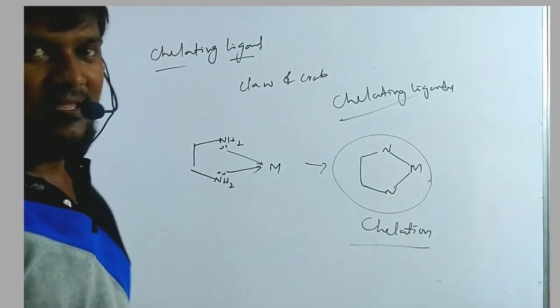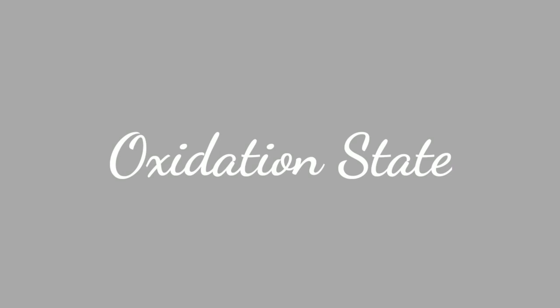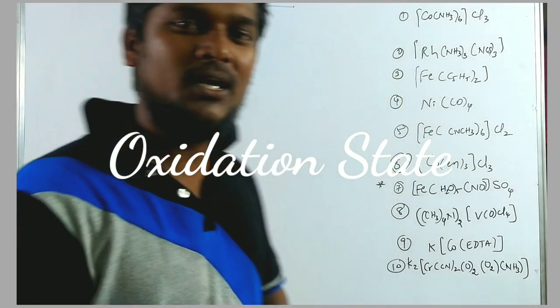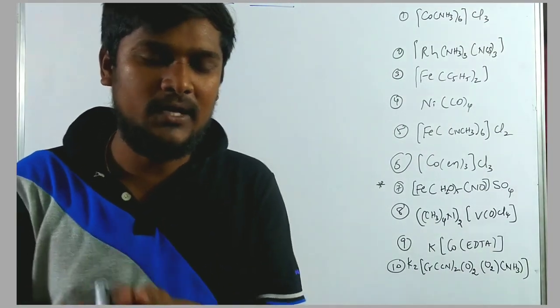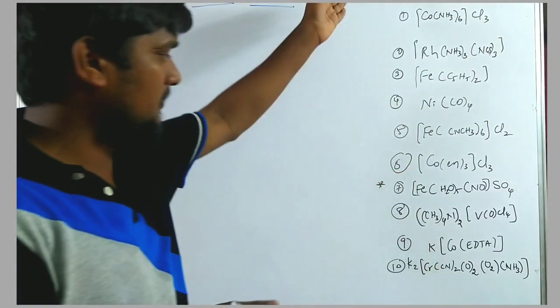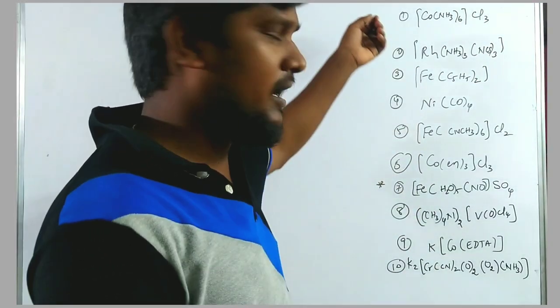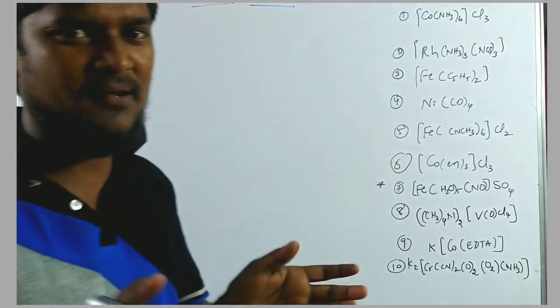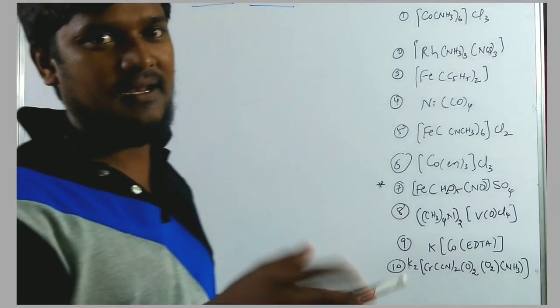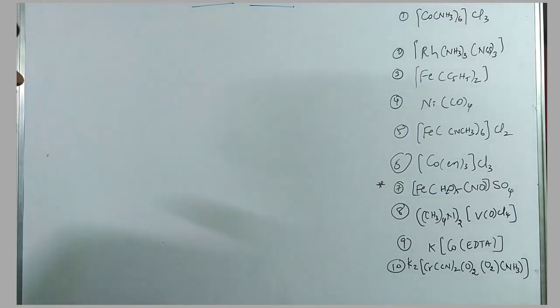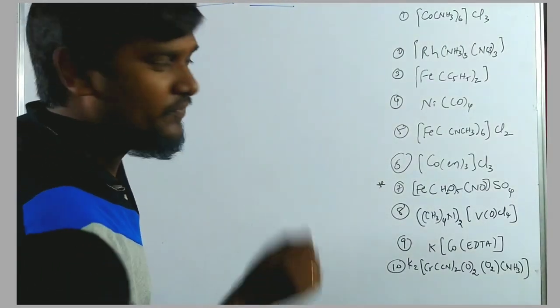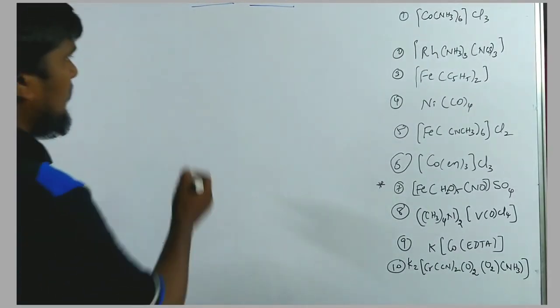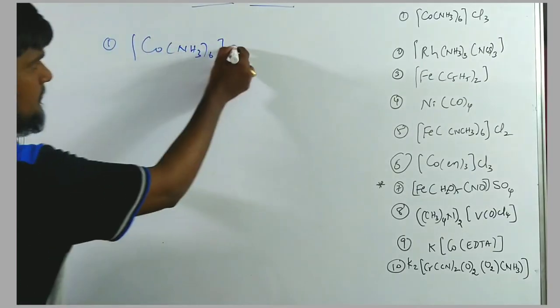These are the second classification of ligands. Now our next topic is oxidation state — how to calculate the oxidation state of coordination compounds. I will give ten examples solved in a simple and tricky manner. The calculation of oxidation state of the central metal atom in complex compounds is done as follows. First example: [Co(NH₃)₆]Cl₃.